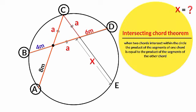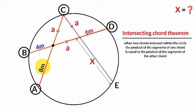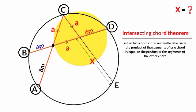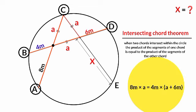Looking at chord AC and chord BD, which intersect at this point, the product of this segment — eight meters — and this segment 'a' must equal the product of this segment — four meters — and this segment, whose length is the sum of 'a' and six meters. So: 8 × a = 4 × (a + 6). Ignoring units, 8a = 4(a + 6).